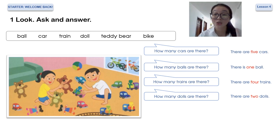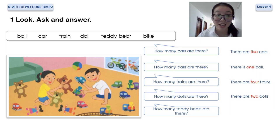Exactly, exactly, there are two dolls. And what's your number five? How many bears are there? One, two, three. There are three teddy bears.